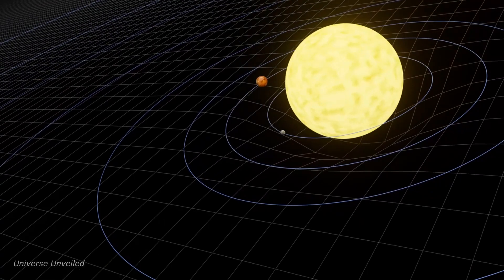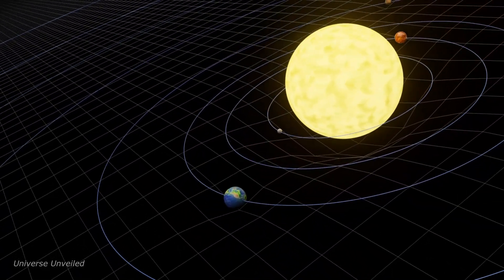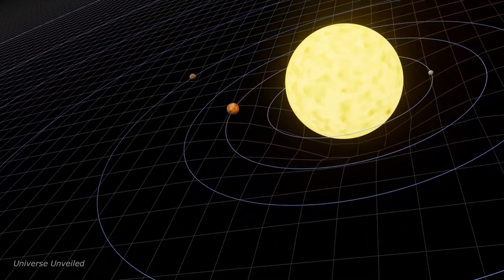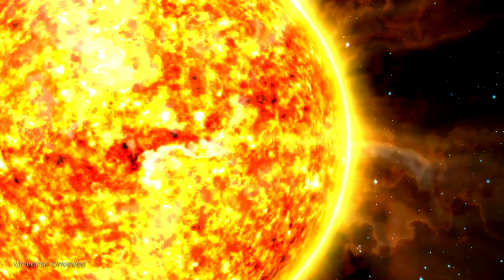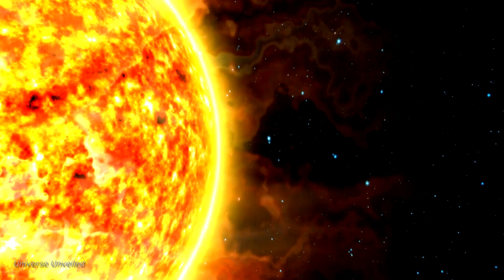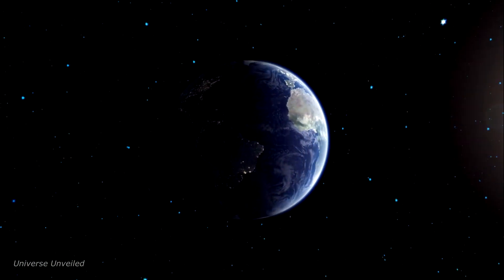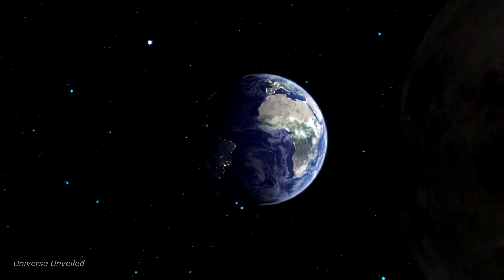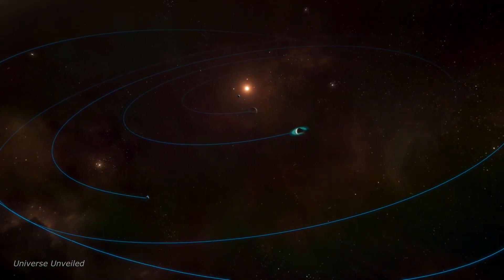The search for habitable planets has taken a new turn with recent findings about planets orbiting M-dwarf stars. Our quest for other worlds, other places where life might exist, has always been relentless. But the journey is not without its challenges and surprises. We recently cast our gaze towards a planet orbiting an M-dwarf star 66 light-years away from Earth, a planet named GJ-1252b.